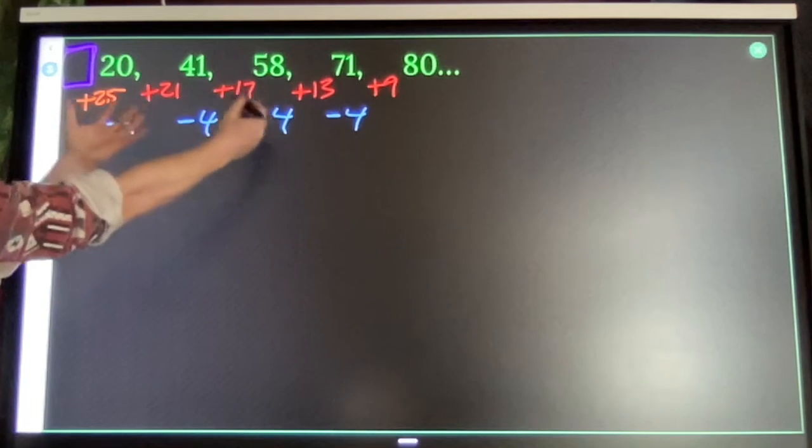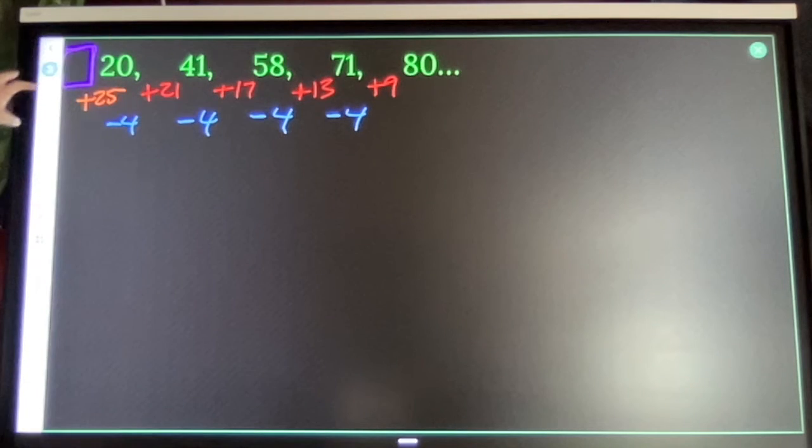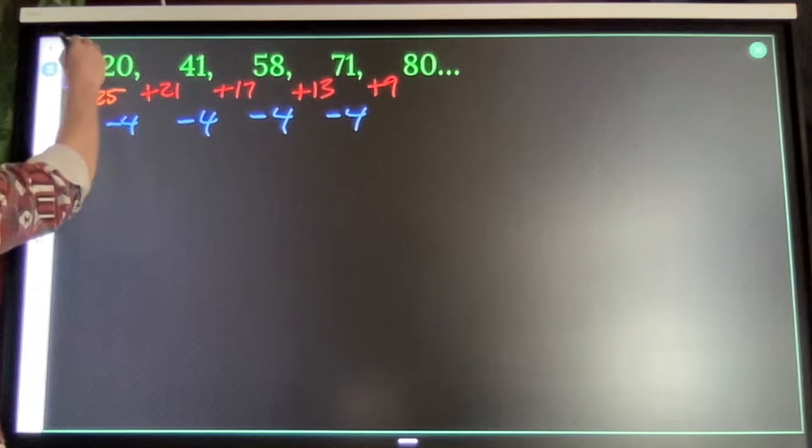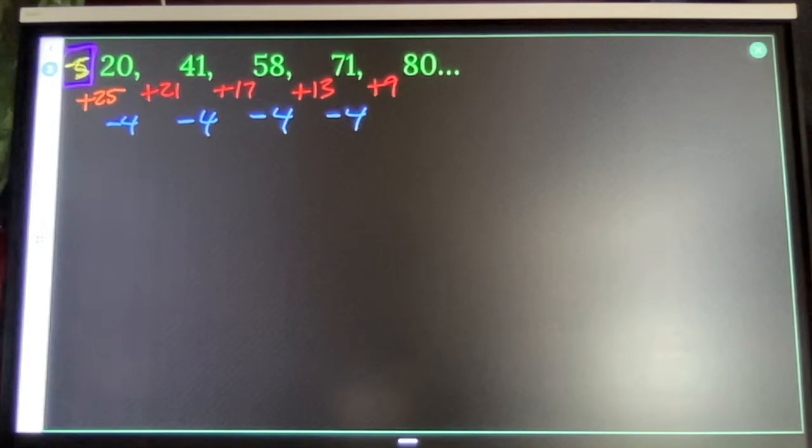That continues the red pattern one step backwards. Some number plus 25 gave me 20. That number is negative 5. Negative 5 is the zeroth term. The number that comes before the first term. That is my constant.